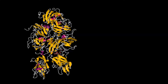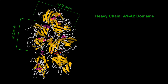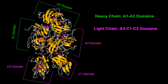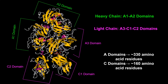This form is divided into a heavy chain consisting of the A1 and A2 domains, and a light chain consisting of the A3, C1, and C2 domains. The three A domains are each approximately 330 residues, while the C domains are smaller, about 160 residues.